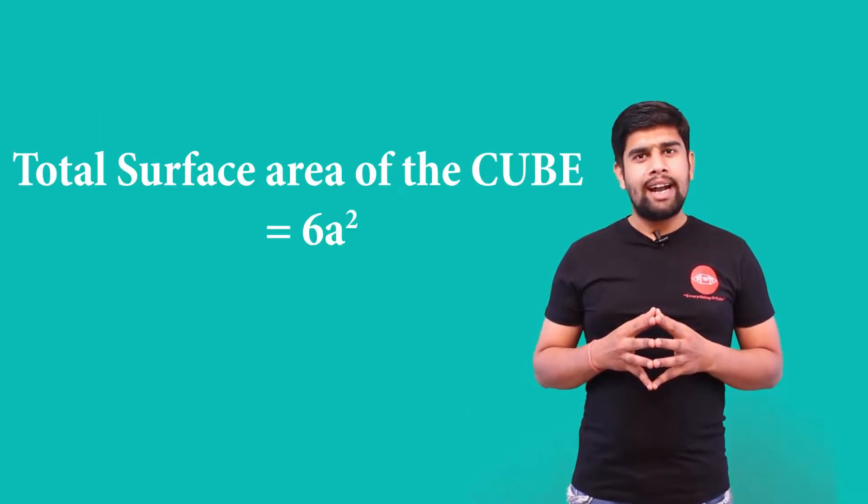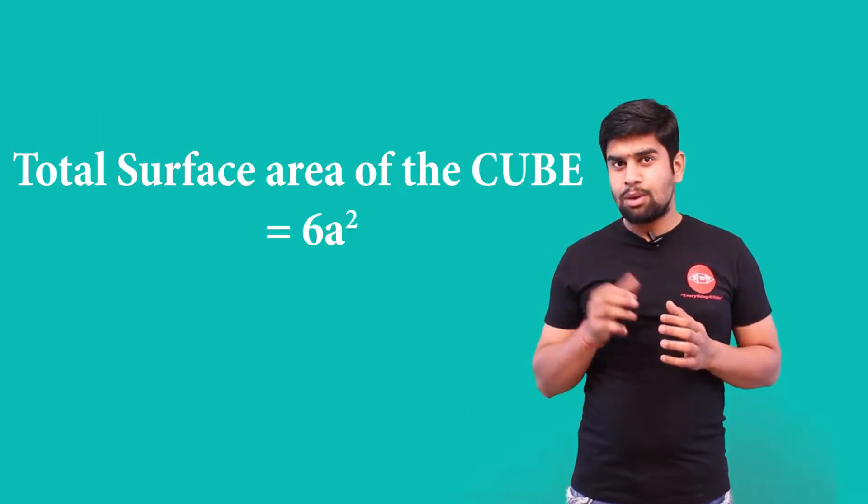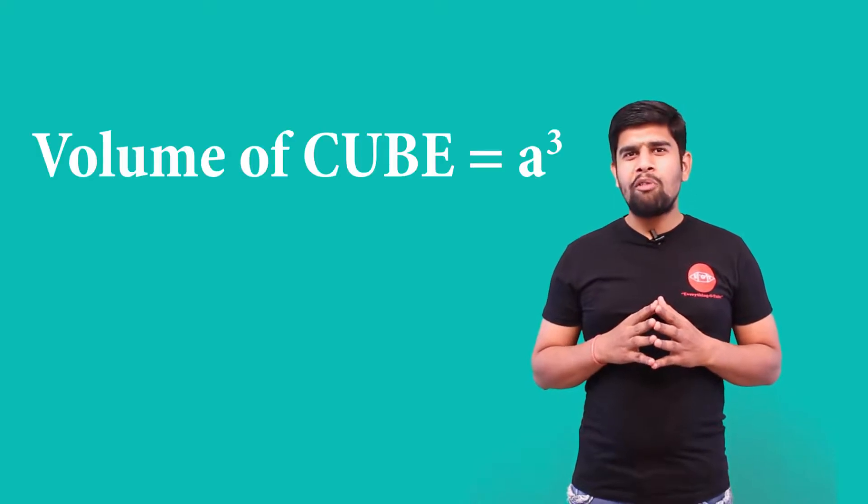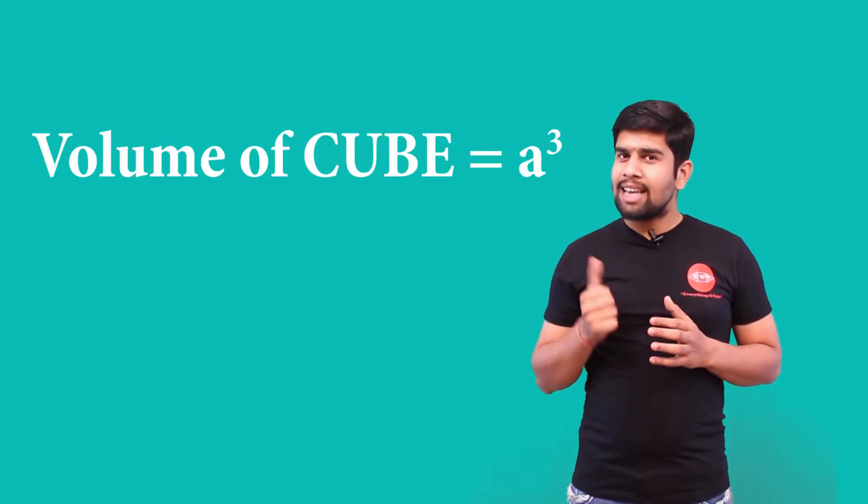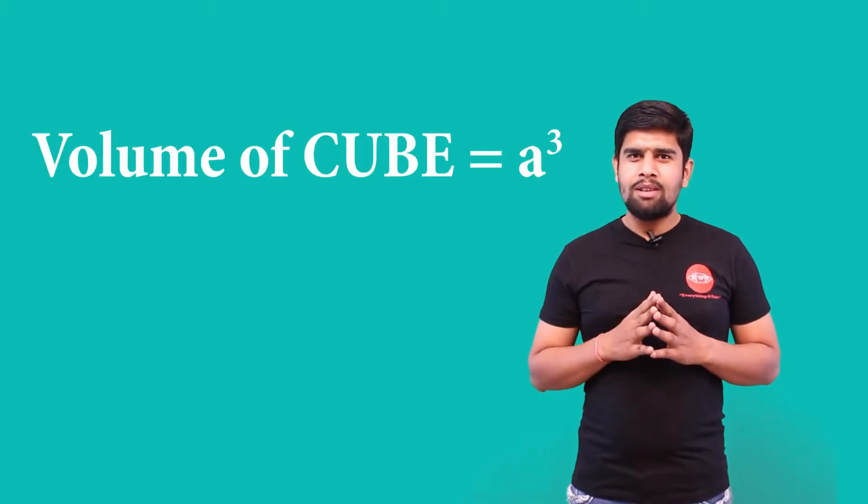In this way, you can calculate the total surface area of a cube, which is 6a², and the volume of a cube, which is a³. Thank you.